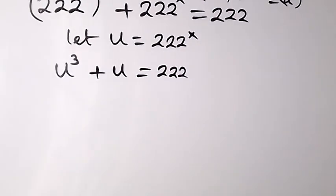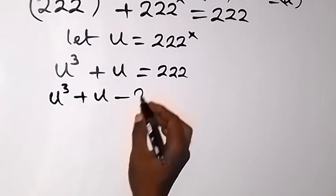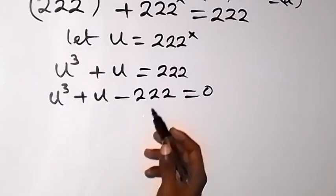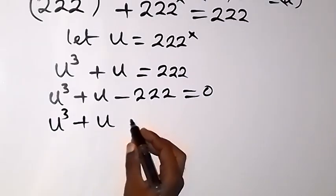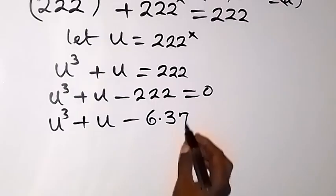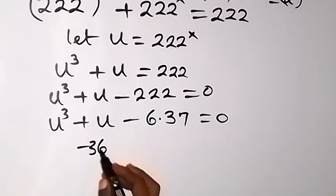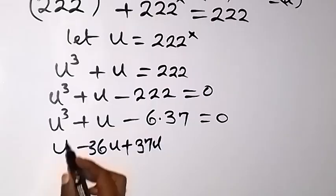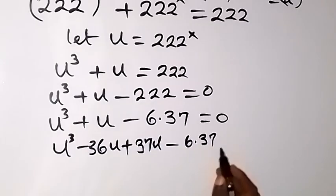We bring 222 to the left side of the equation, giving us u³ plus u minus 222 equals 0. From here, we factor 222 and write it as 6 times 37, so we have u³ plus u minus 6 times 37. The u term can be rewritten as minus 36u plus 37u, since 37 minus 36 gives us plus u. So we have u³ minus 36u plus 37u minus 6 times 37, equals 0.